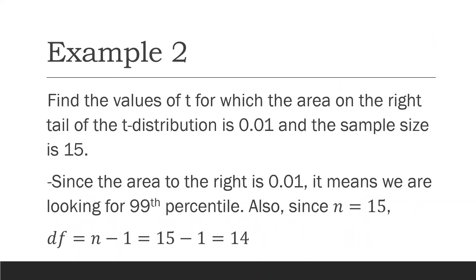Second example: find the value of t for which the area on the right tail of the t-distribution is 0.01 and the sample size is 15. Since the area to the right is 0.01, we are looking for the 99th percentile. Also, since the sample size is 15, the degrees of freedom is 14, because degrees of freedom equals sample size minus 1.